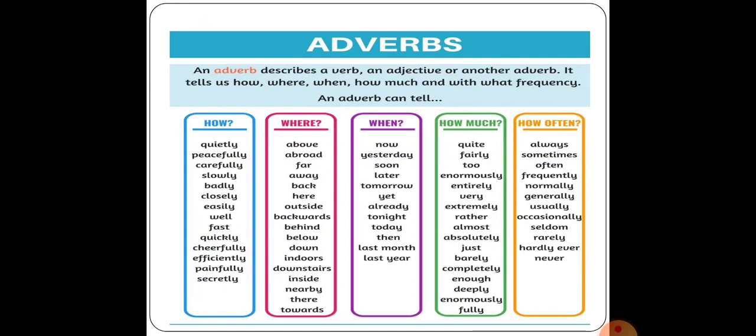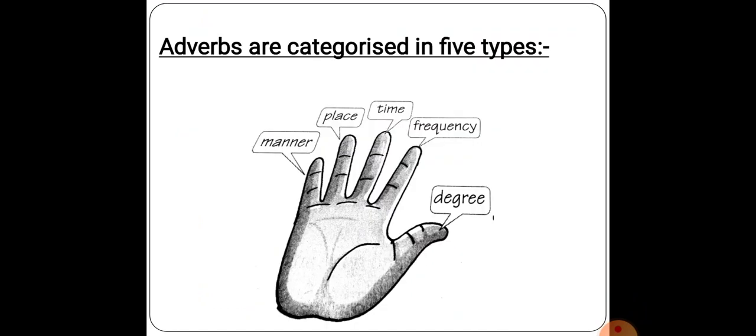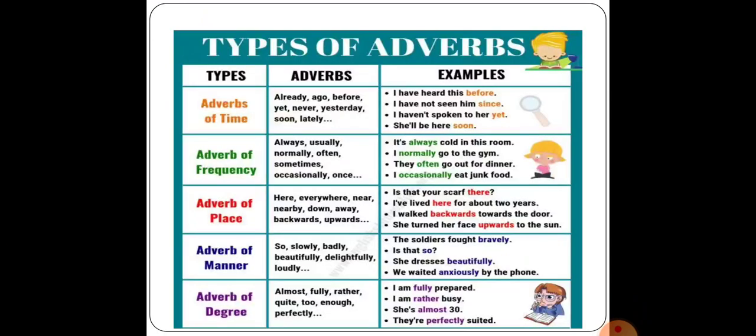In this picture you can see some colored boxes with sentences and words. These words are used as adverbs in a sentence — when they are used in a sentence in a special place, they act as an adverb. They tell us how, where, when, how much, and how often. Adverbs are categorized into five types: adverb of manner, adverb of place, adverb of time, adverb of frequency, and adverb of degree.